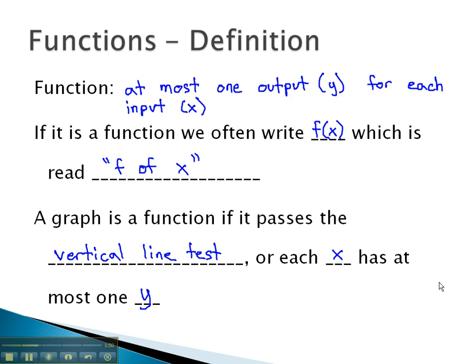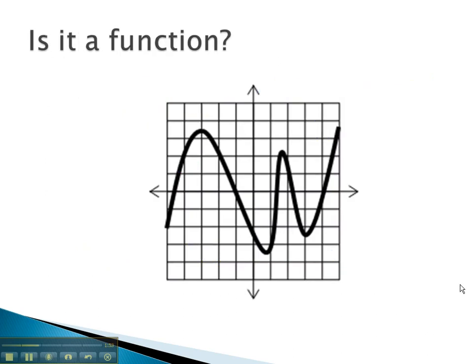For example, if we consider this graph, and we want to know if it's a function, what we're really asking is, does any x value, for example, this point, have more than one output? By drawing a vertical line, we can see the graph crosses exactly once. No matter where we draw this vertical line to test an x value, there is only one y value that corresponds with any x value on the graph.